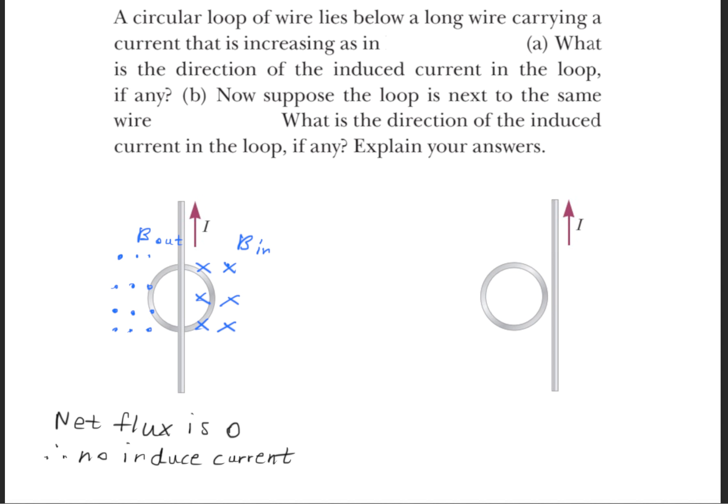And when we have a zero flux, there will be no induced current. For Part B, we're going to do the same thing once more. And again, on the left side of the current-carrying wire, the B field is coming out of the page.